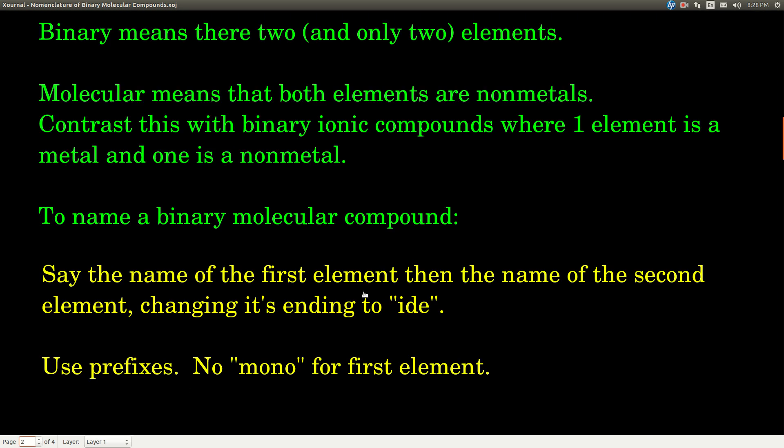What is a binary molecular compound? Well, binary, just like in binary ionic compounds, in binary molecular compounds means that there are two and only two elements.